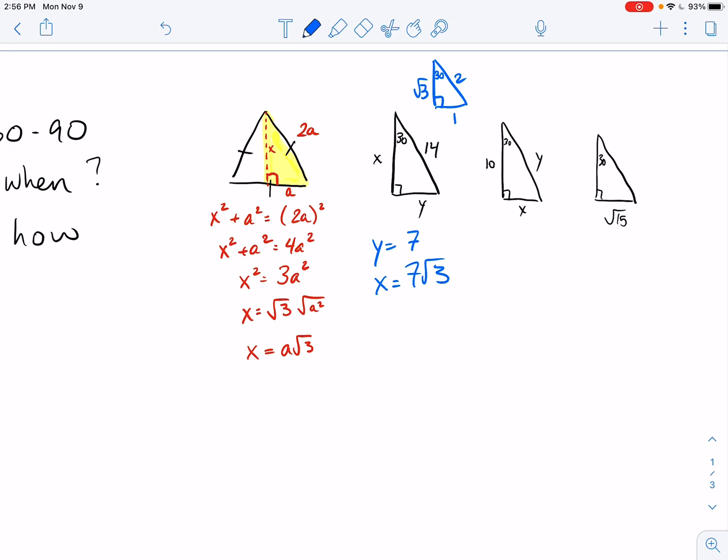Now the next one gets a little bit more involved. This is 10 over root 3 is equal to x over 1. I want you to rationalize these. And that's our x value. And then our y value is twice that big. And we're done.